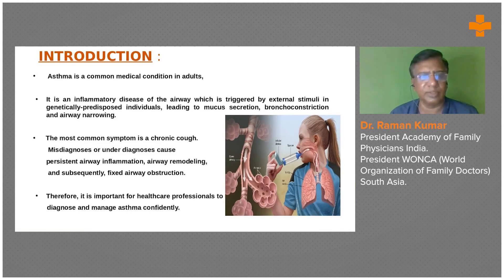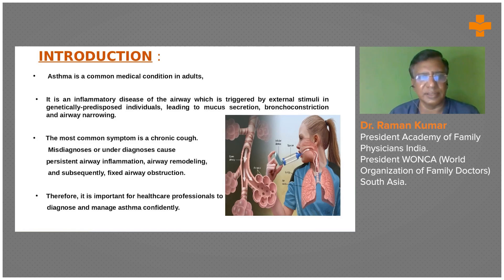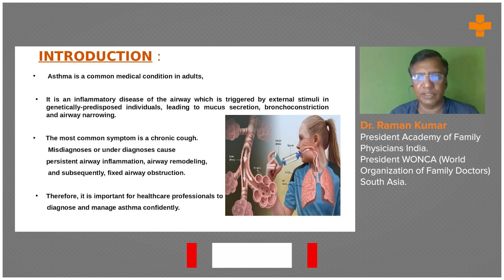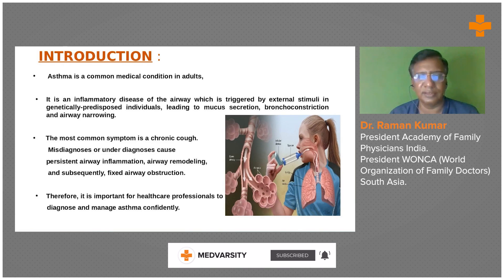Bronchial asthma is a very common medical condition seen in adults, pediatrics, and all age groups. Looking at the pathology, it is an inflammatory disease of the airways triggered by external stimuli. There is a genetic predisposition described in literature, which leads to mucous secretion, bronchoconstriction, and disease of the airways. Not all people respond badly to such stimuli — there is a genetic background to it.